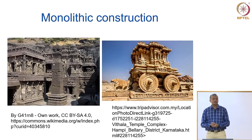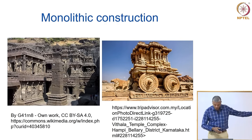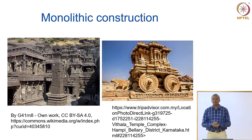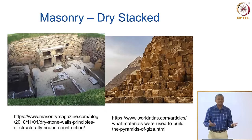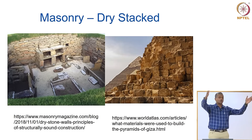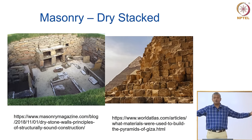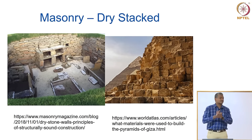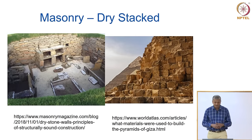Some examples of monolithic construction: the figure on the right is from Hampi — a chariot carved out of a single rock. On the left is from Ellora, where an entire temple has been carved from a single rock. Moving forward to masonry, the simplest examples are dry-stacked masonry, where blocks are placed on top of one another and remain stable simply because of gravity and sheer mass. As you go to the top, you reduce the size of components. The great pyramids of Egypt are essentially dry-stacked limestone blocks, which even today are a significant landmark.